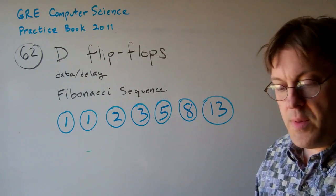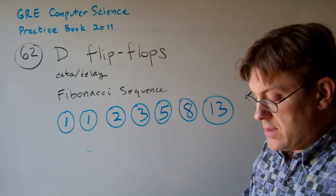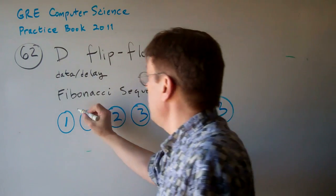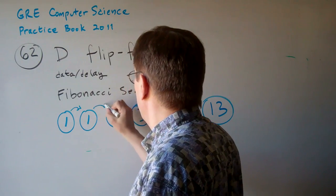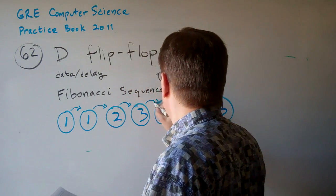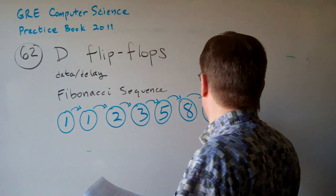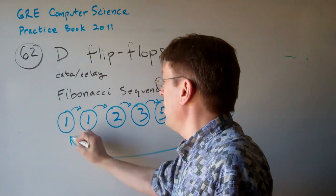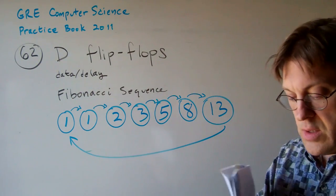So what happens? We build a state diagram. The state diagram just goes sequentially like this and then wraps back around. So that's our state diagram.